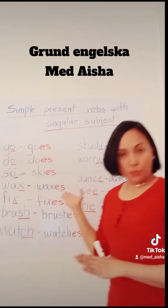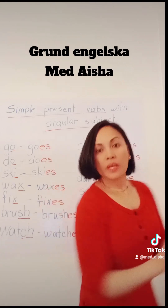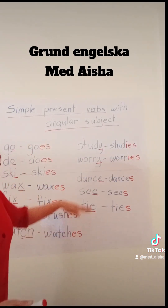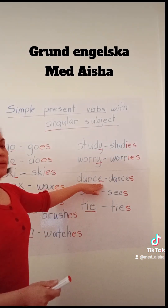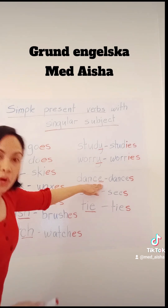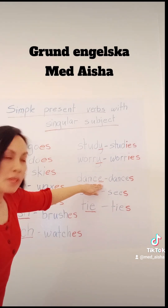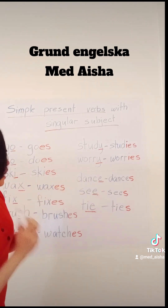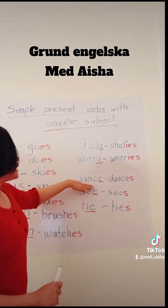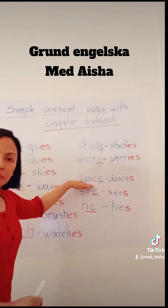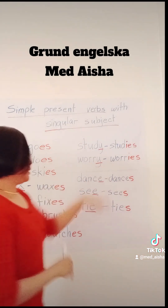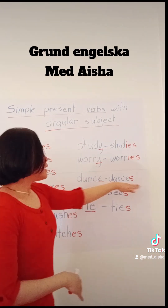Next rule: if your verb ends with E — for example, DANCE — just add S.